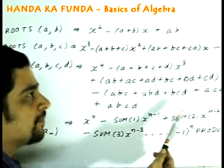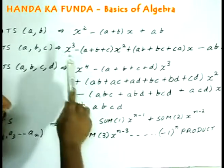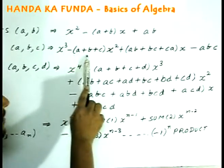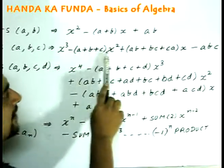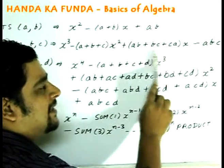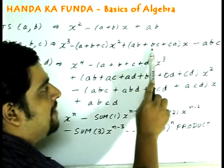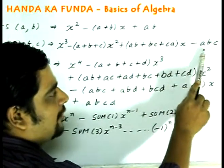If it has three roots a, b, and c, then it would be x³ minus (a+b+c) or sum of the roots individually with a negative sign into x² plus the roots multiplied with each other two at a time, that is ab, bc, and ca into x minus the product of the roots abc.